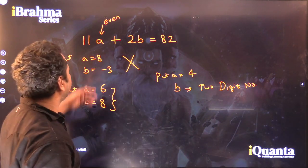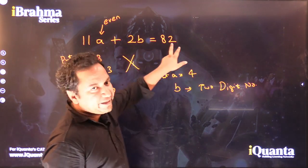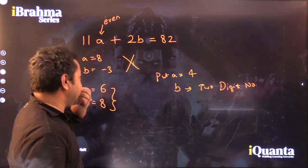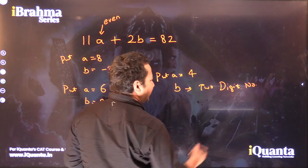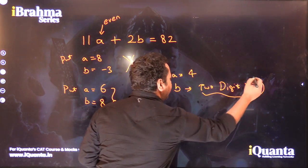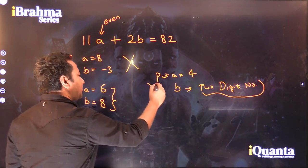11 × 4 = 44, and 82 - 44 = 38. So B will be 19 in that case, which is a two-digit number. So again, this case is not possible.